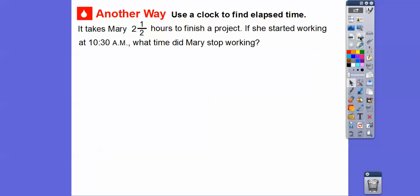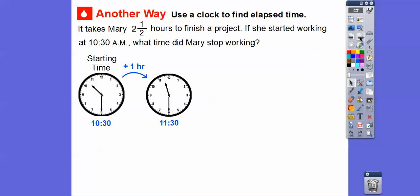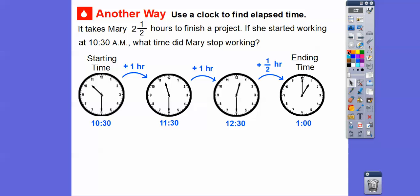Here's another way. We can use a clock to find the elapsed time. She started at 10:30. If we add an hour, that takes us to 11:30. It's halfway between 10 and 11, and the minute hand is on a 6. So this is 10:30. If we add an hour, that's 11:30. Let's add another hour, that takes us to 12:30. And then we'll add the half an hour, it's going to jump it up to 1 o'clock. So Mary stopped working on her project at 1 o'clock in the afternoon.